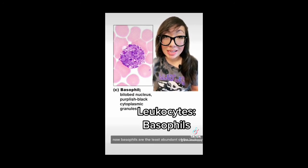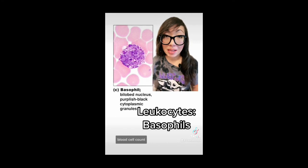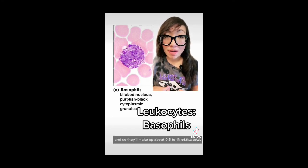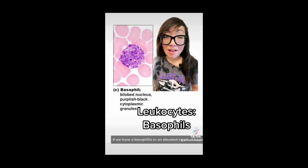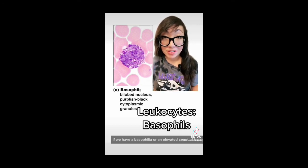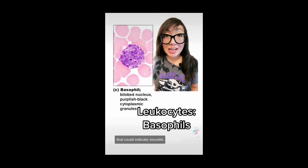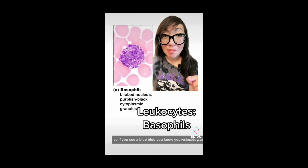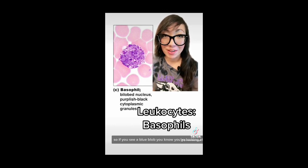Basophils are the least abundant of the leukocytes within a complete blood cell count, making up about 0.5 to 1% of the total. If we have a basophilia, or elevated count of basophils within the blood, that could indicate sinusitis, chickenpox, or maybe even diabetes mellitus. So if you see a blue blob, you know you're looking at a basophil.